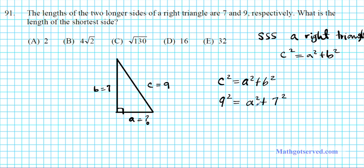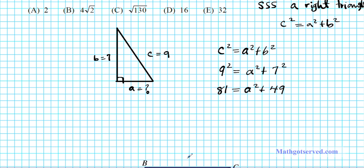Let's get A isolated. 9 squared is 81, and 7 squared is 49. To isolate A squared, we subtract 49 from both sides. Using the reflexive property of equality, A squared equals 81 minus 49, which is 32. Then to get A isolated, we take the square root of both sides, giving us A equals the square root of 32.